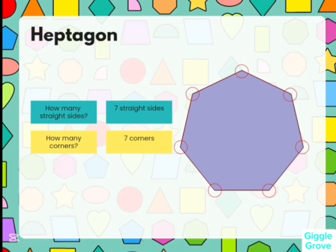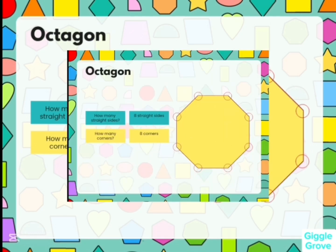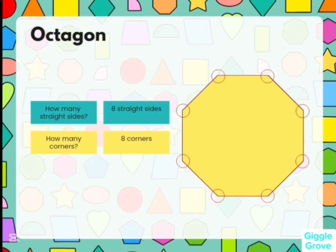Let's discuss heptagon. How many straight sides? There are seven straight sides. And how many corners? There are seven corners. Octagon — how many straight sides can you see? There are eight straight sides. And how many corners are there? There are eight corners.